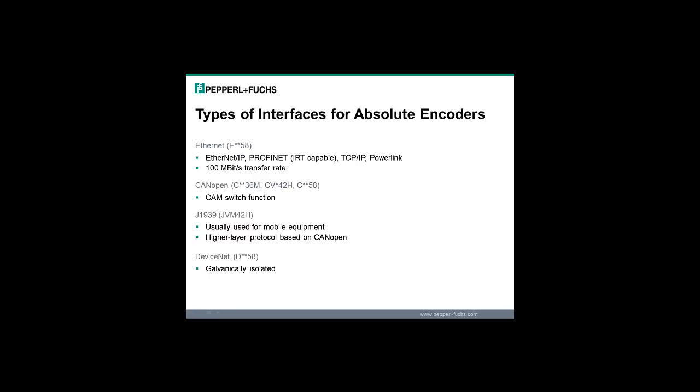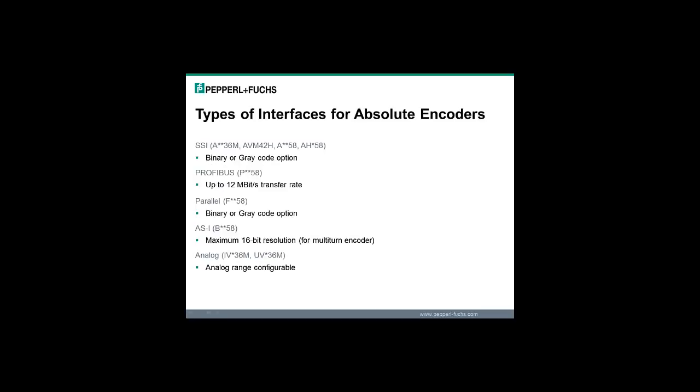When selecting an absolute encoder, the protocol or output also needs to be selected. The series nomenclature first letter indicates the protocol of the absolute encoder. E is for Ethernet, C is for CANopen, J is for J1939, D is for DeviceNet. A is for SSI, P is for PROFIBUS, F is for Parallel, B is for AS Interface, I is for Current Analog, and U is for Voltage Analog Output.